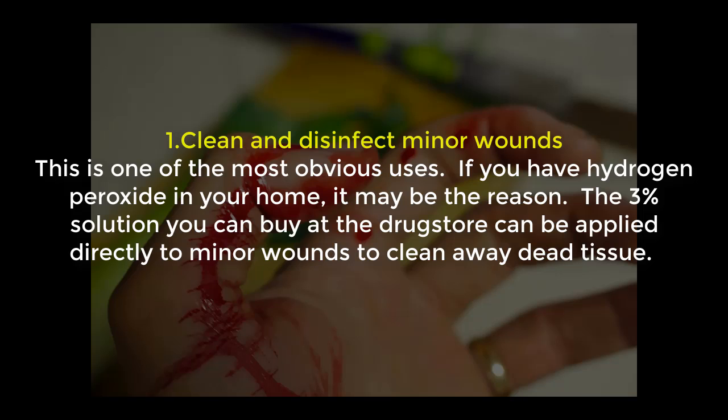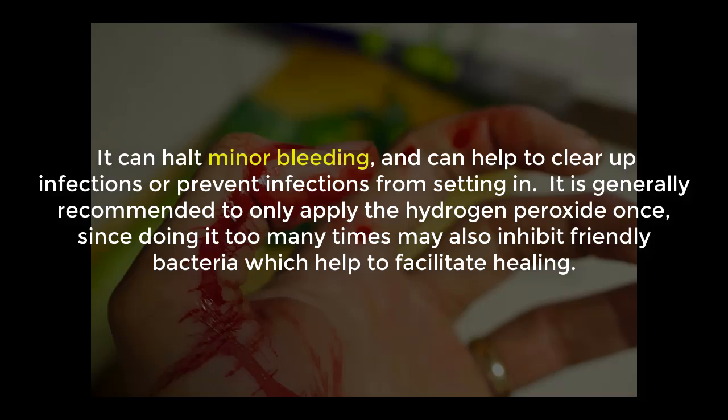Number one: clean and disinfect minor wounds. This is one of the most obvious uses of hydrogen peroxide. The 3% solution you can buy at the drug store can be applied directly to minor wounds to clean away dead tissue. It can help stop minor bleeding and help clear up or prevent infection. It is generally recommended to only apply hydrogen peroxide once, since doing it too many times may also inhibit friendly bacteria which help facilitate healing.